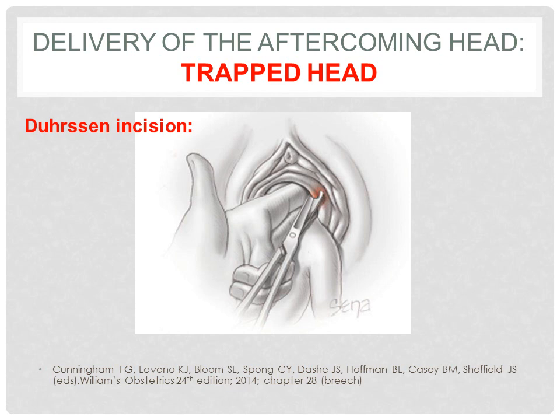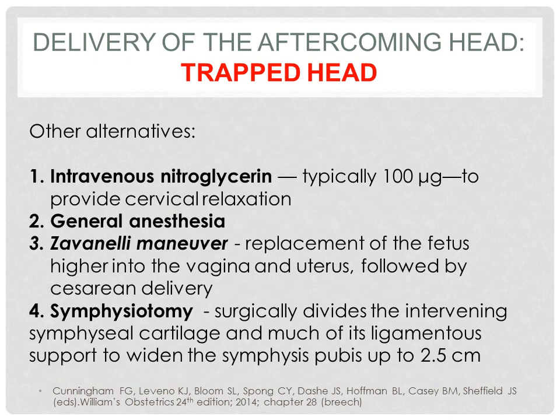If all the maneuvers fail to deliver the after-coming head, here are some other options. We can do a Dührssen incision, where we incise the cervix at the 2 o'clock and the 10 o'clock position. Other alternatives include intravenous nitroglycerin, typically 100 micrograms, which will provide cervical relaxation. We can also have the anesthesiologist start a general anesthesia. We can do the Zavanelli maneuver, where we replace the fetus higher into the vagina and uterus and then do a cesarean section. And lastly, we can do symphysiotomy, where we surgically divide the intervening symphysial cartilage and much of its ligamentous support to widen the symphysis pubis up to 2.5 cm.